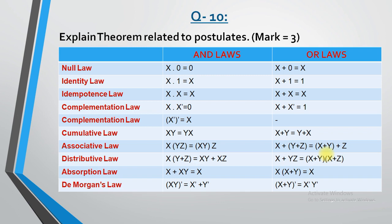In front of you there is a table with 3 columns. The first column contains the names of the different laws. The second column represents the AND gate law. We have 11 different types of laws. In the AND gate it is represented by multiplication sign, and the OR gate is represented by plus sign.